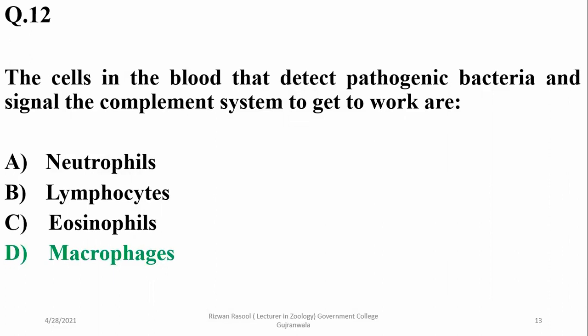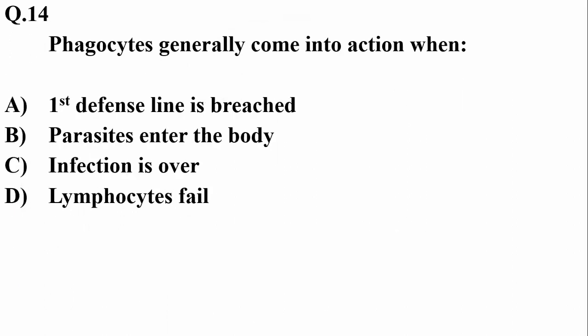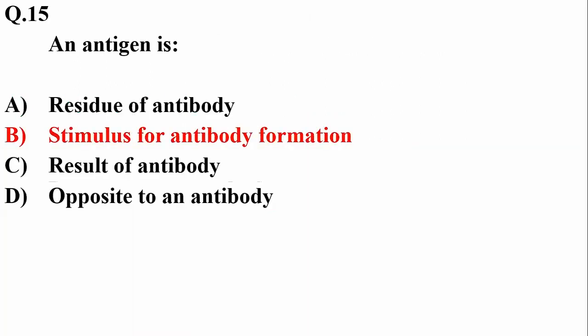The diversity among antibodies is due to changes in the sequence of both light and heavy chain variable regions. Phagocytes generally come into action when the first defense line is breached. The second defense line is then activated, which includes phagocytes, antimicrobial proteins, the complementary system, inflammatory response, and the liver.